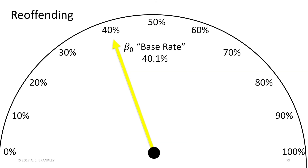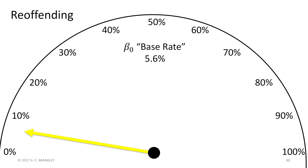Another problem can come up with changes in the base rate of the outcome. This is not a problem with the tool per se, but can create problems for measuring the full range of risk. The problem is particularly noticeable when the base rate is much lower, as is the case with sexual offending. In this case, you would need a large risk ratio to accomplish the herculean task of moving that needle from the 5.6% base rate into the 85% zone needed to measure the lower threshold for Level 5.